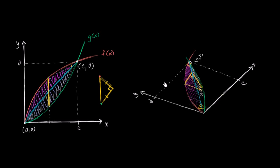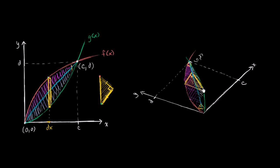So let's think about it. If we want to find the volume, one way to think about it is we could approximate the volume as the volume of these individual triangles. That would be the area of each of these triangles times some very small depth, which we could call dx. So we could find the volume of each of these by finding the cross-sectional area and then multiplying that times a little dx, which gives us three-dimensional depth.